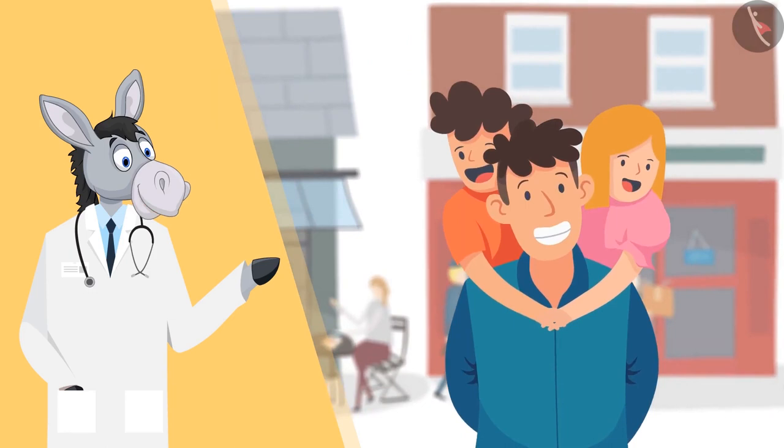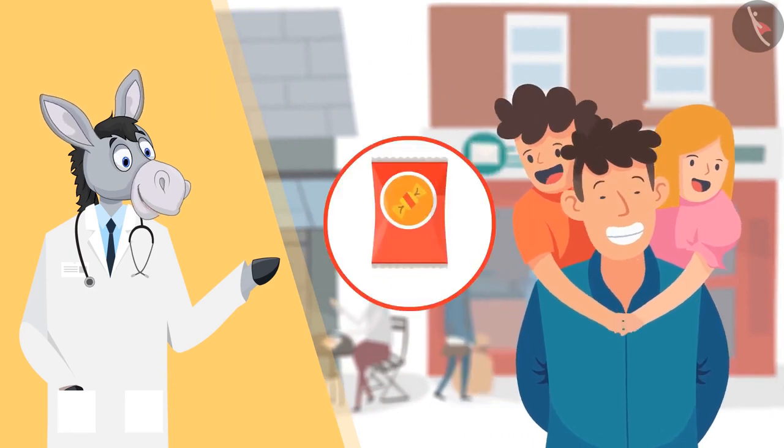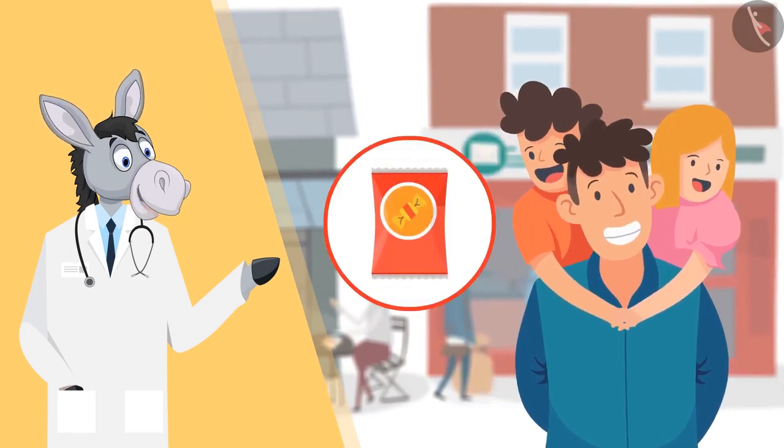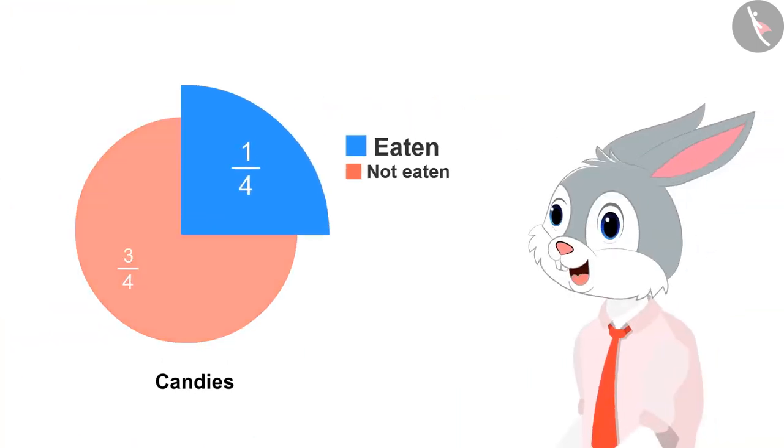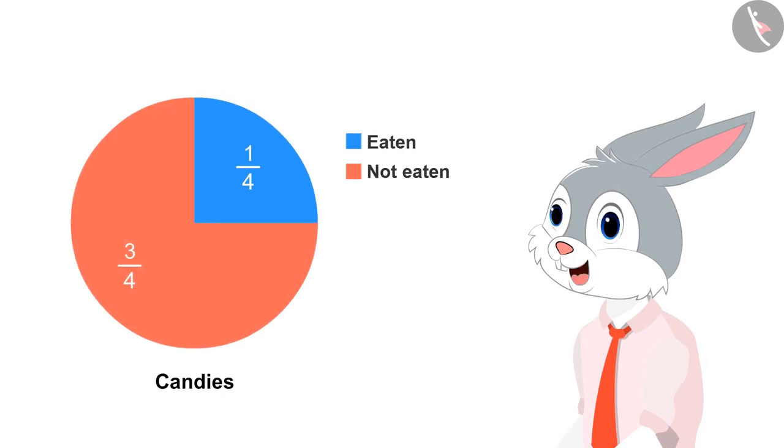Father of Bhimla and Chandu has bought a packet of candy. It contains 40 candies. Now, look at this pie chart to find out how many candies have been eaten by the kids. They ate one by four, that is one-fourth of the candies. So, one-fourth of forty is ten. Children ate ten candies.